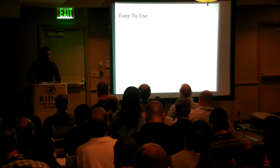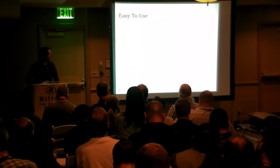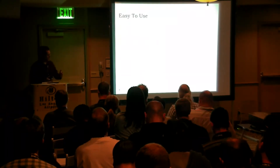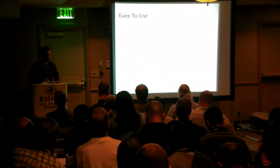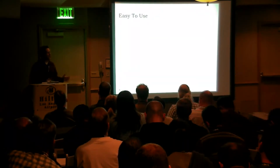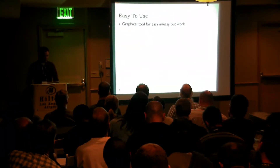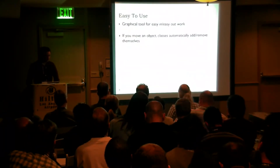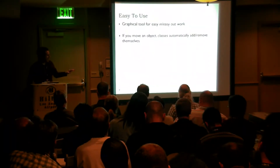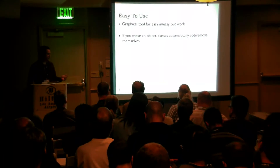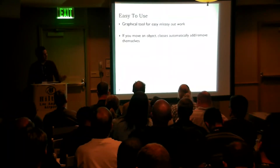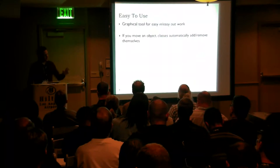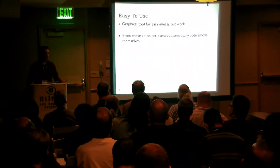I find it easy to use — it's a graphical tool for easy in, easy out work. It's a little bit to wrap your head around in terms of shifting to this hierarchical model, but based on what I had used previously, this came most naturally. One of the features is if you move an object from one leaf on LDAP to another, the script will automatically disassociate the previous classes and associate the new ones. For example, migrating from Tomcat 6 to Tomcat 7: you'd move the computer object from the Tomcat 6 tree to the Tomcat 7 tree, and the classes automatically swap.